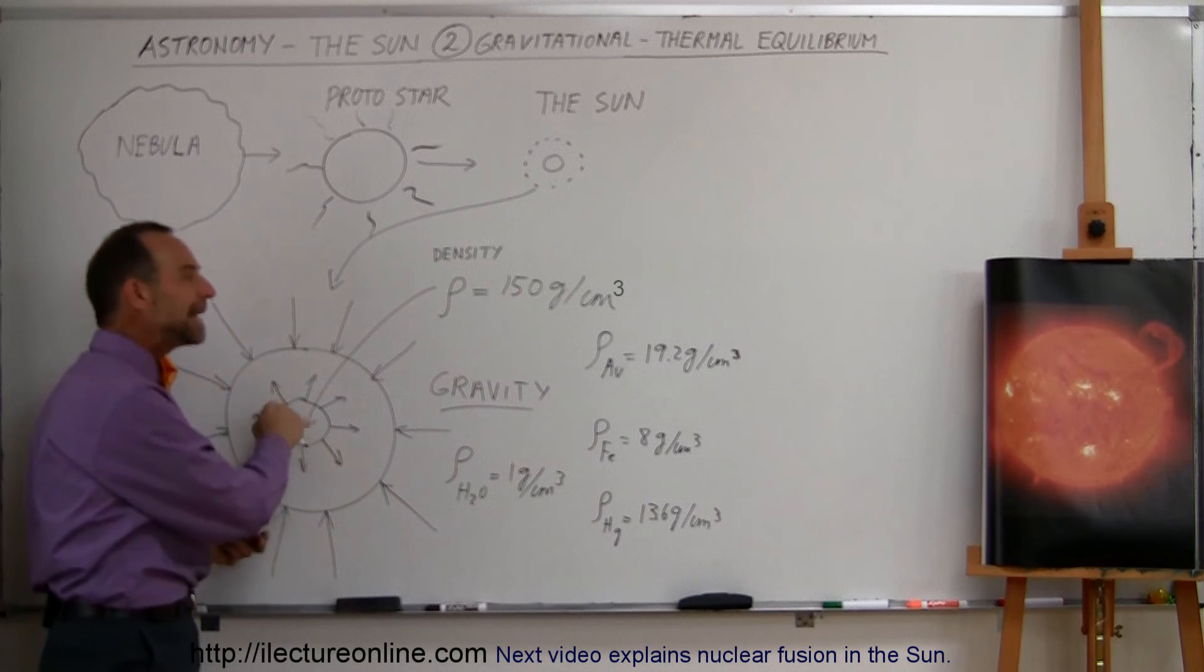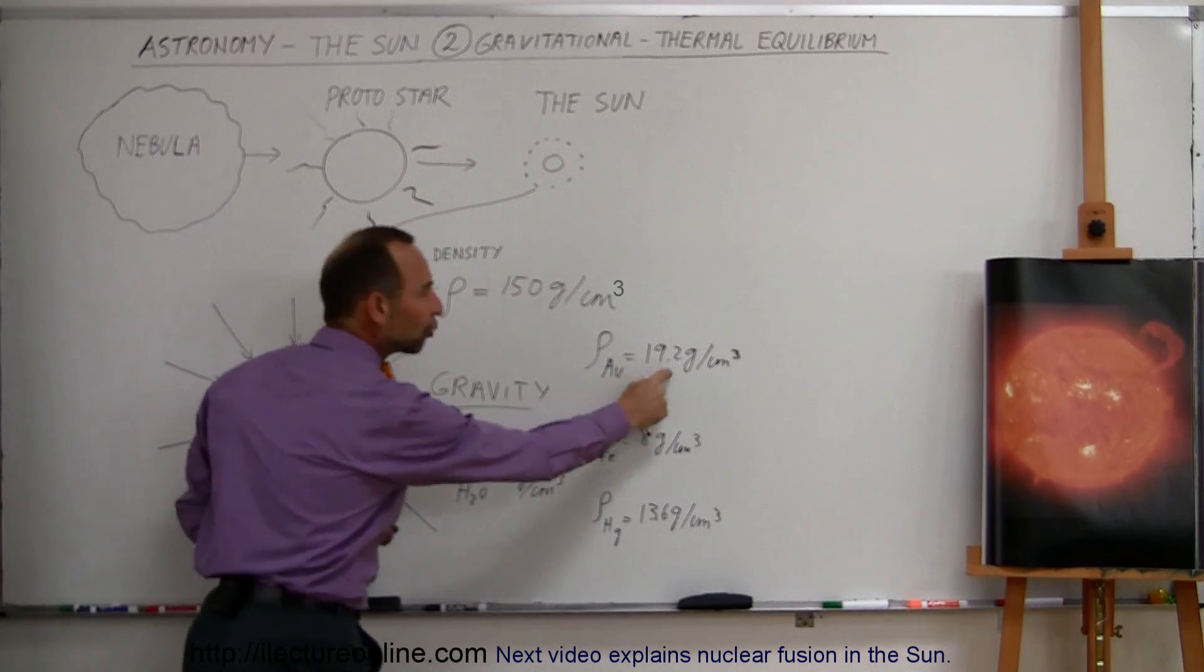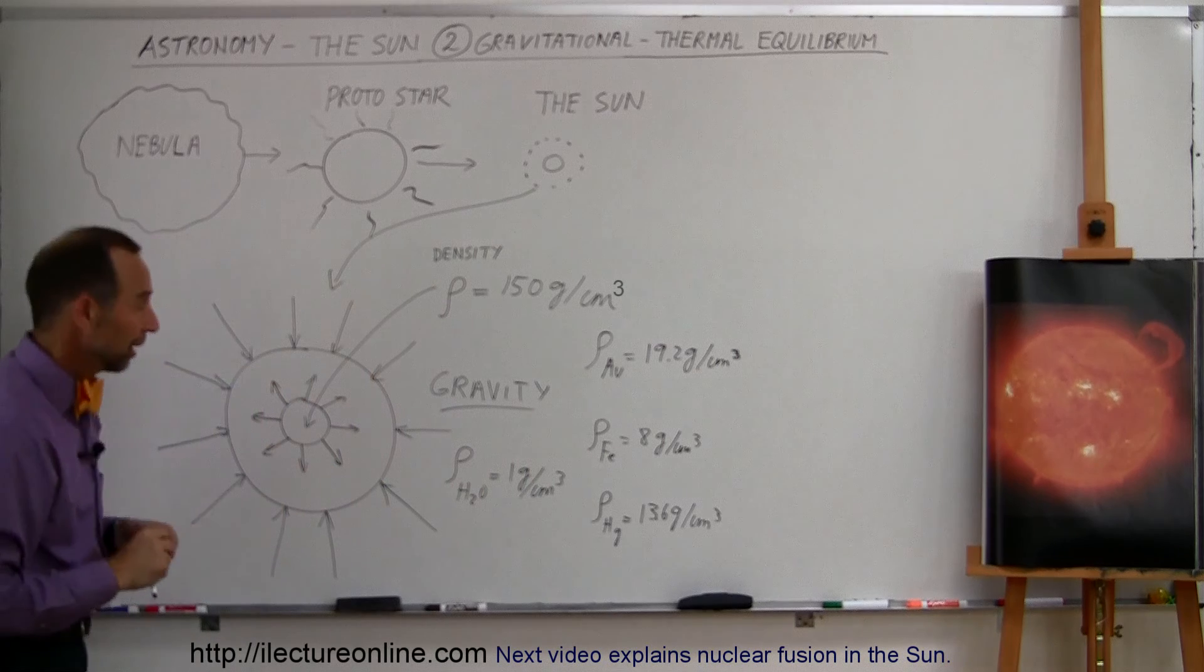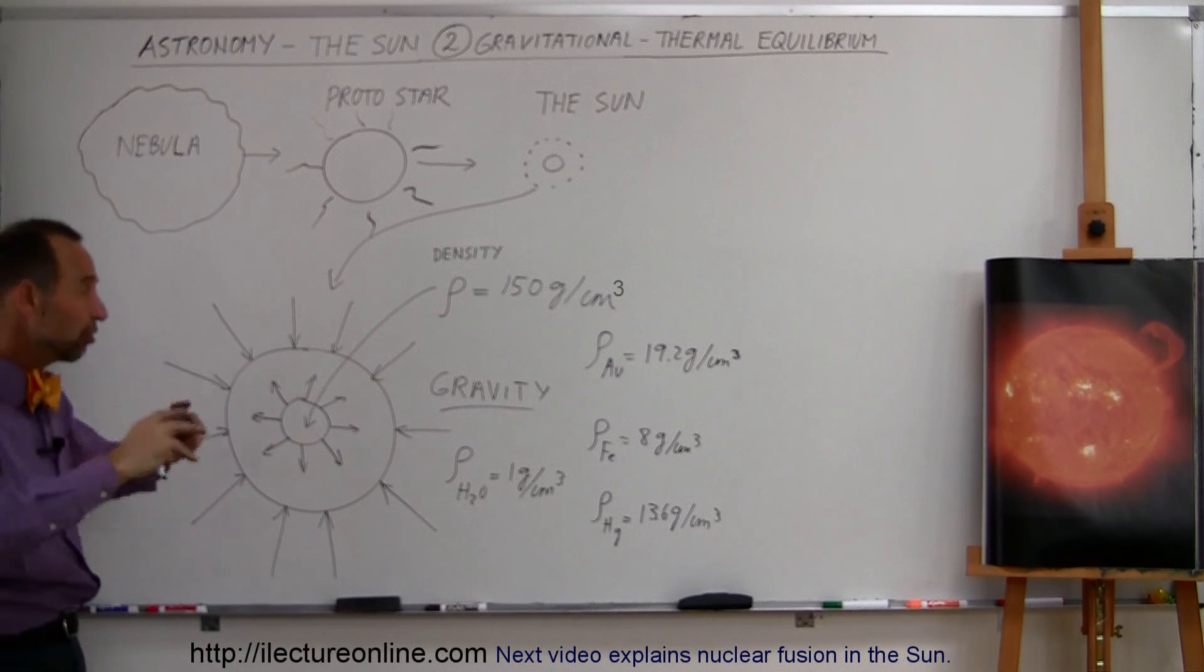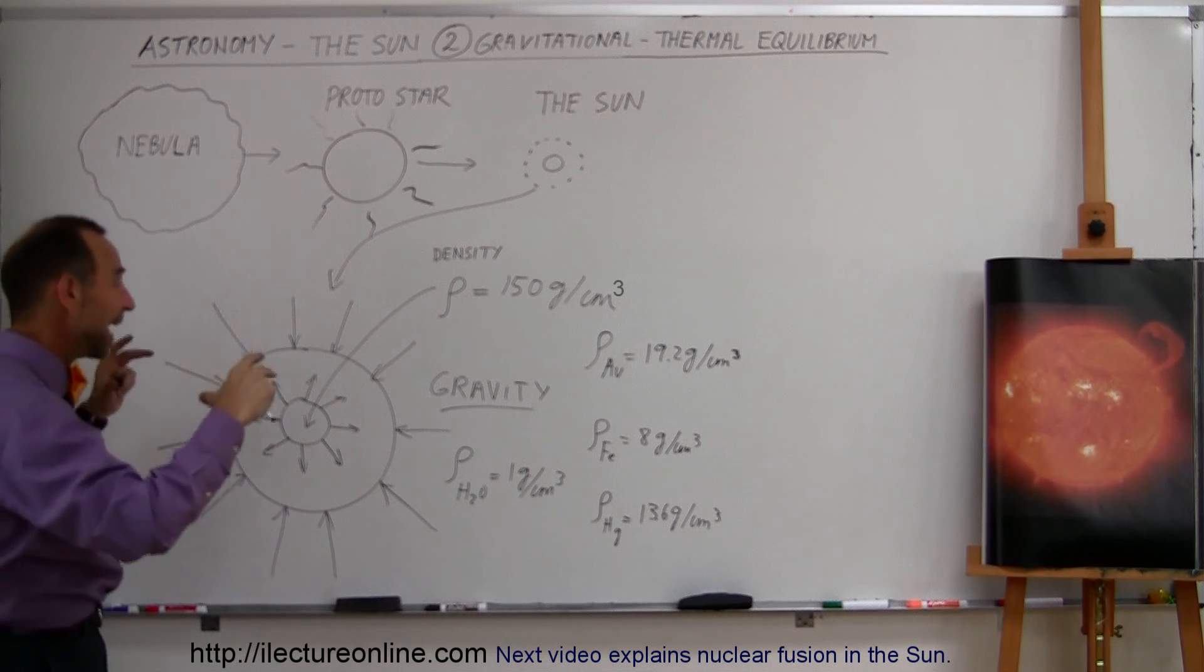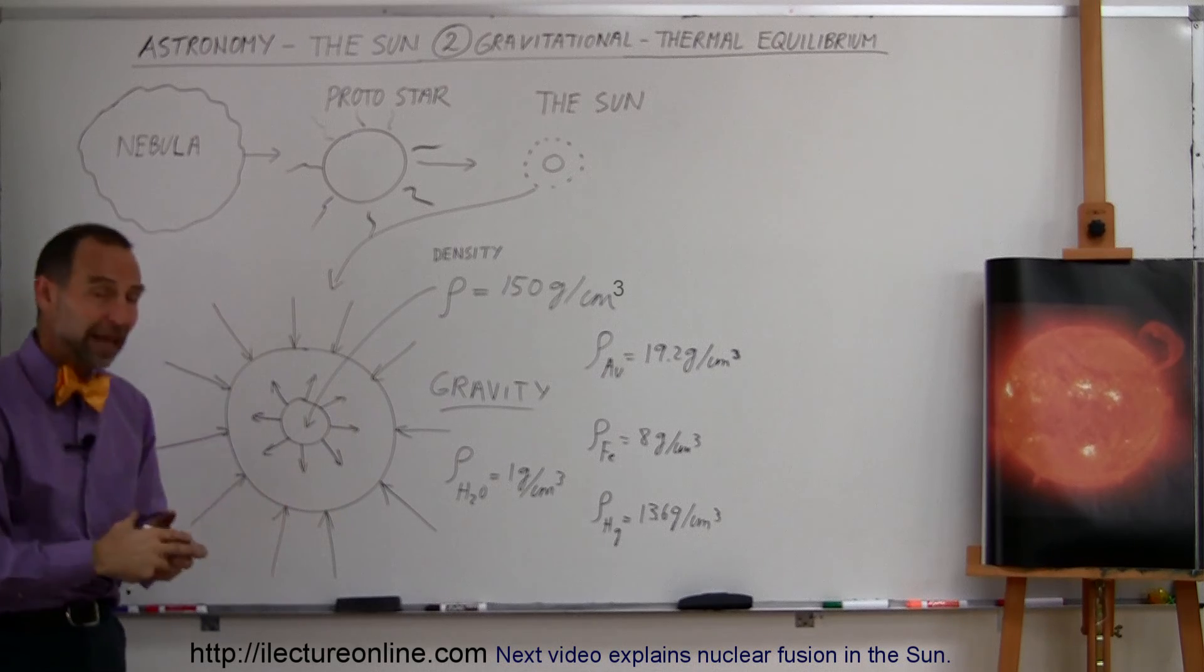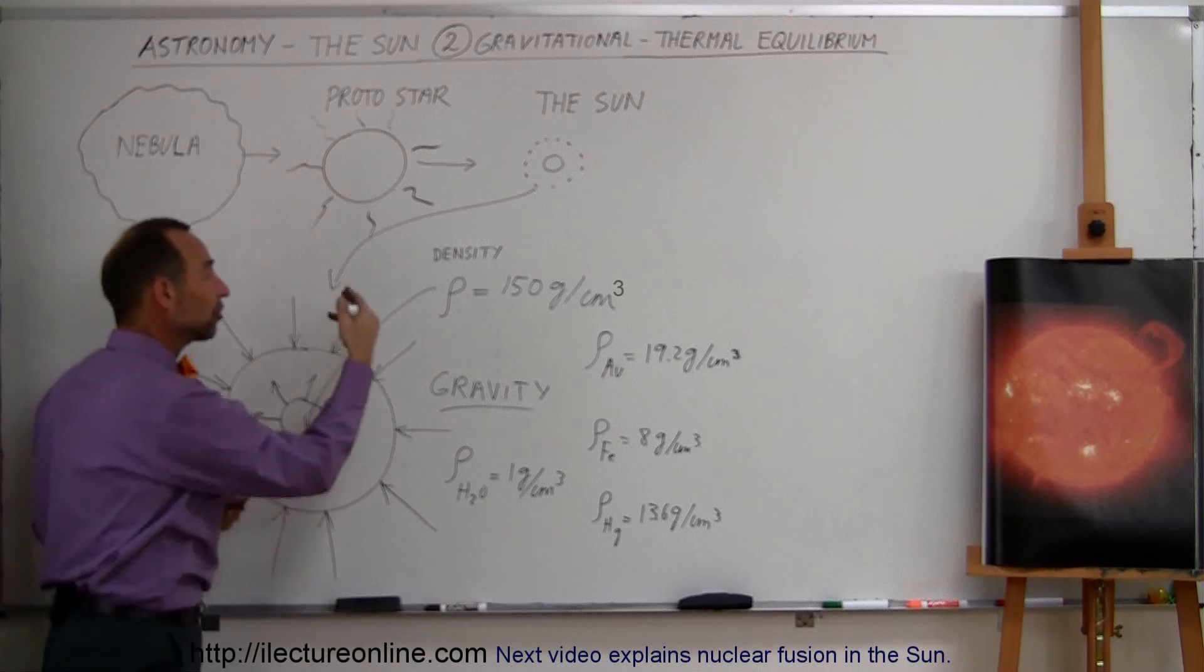So notice gold, as dense and as heavy as it is, the sun is like 7 or 8 times as dense as gold is at the very center. And so you can see that these enormous pressure, these enormous gravitational pressures, push gas, which essentially the sun is a big ball of gas, pushes down to a density that is just absolutely enormous.